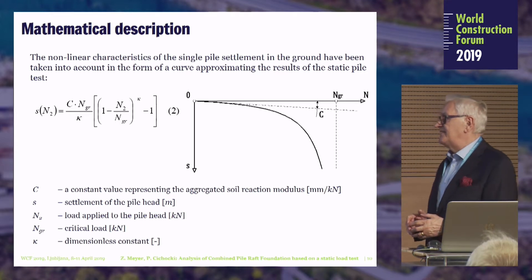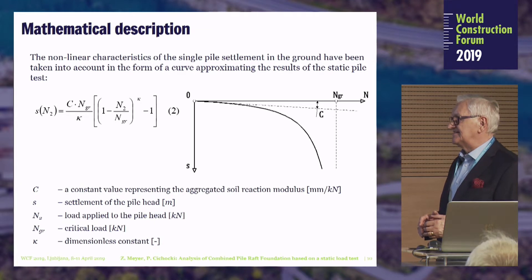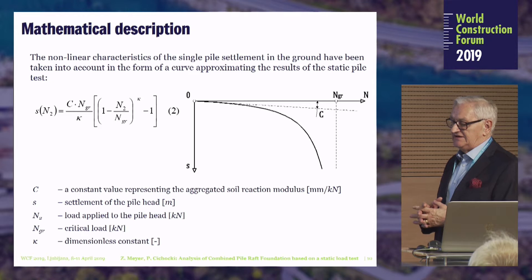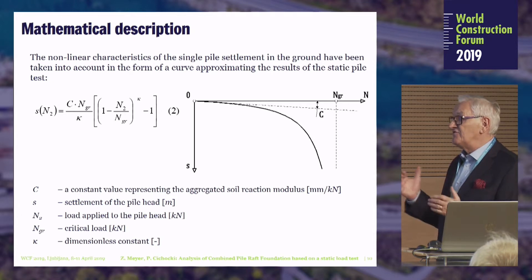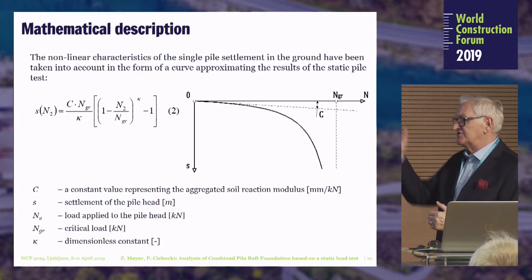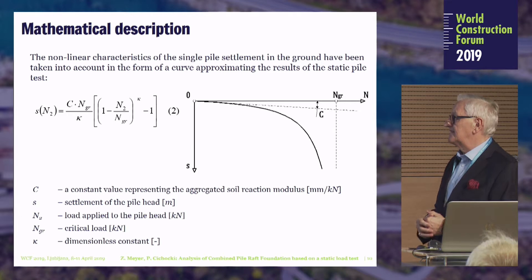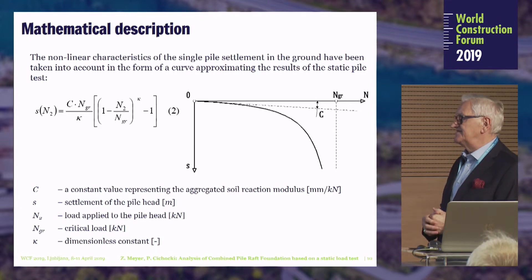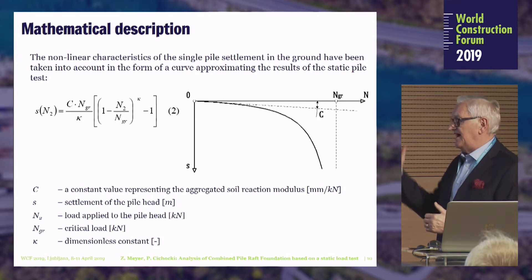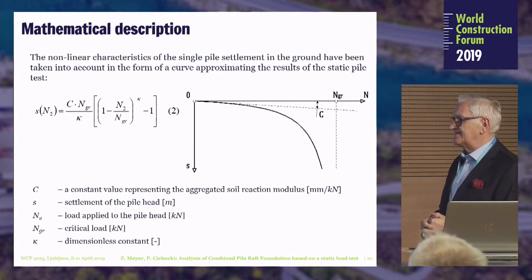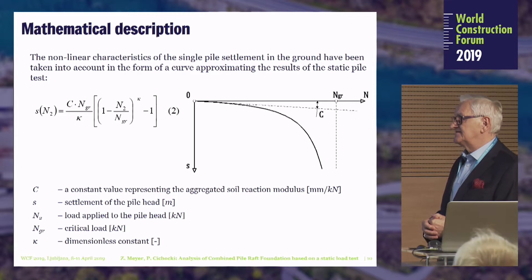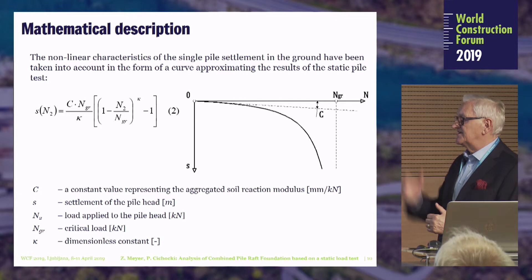There is a curve which helps us solve the problem. To use the static load test, we needed to prepare a description of the curve. We cannot use directly the measured points of load and settlement from the static load test because we have no information about toe resistance and skin resistance separately. This curve satisfies some physical principles — there are two asymptotes: one at the point zero and the other at the point N-critical. Between them, depending on the power k, the curves slightly shift. We prepared special methods of approximation using statistics and soil mechanics principles to estimate these three parameters.